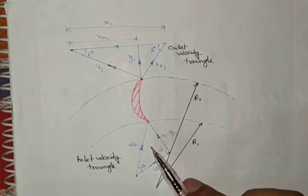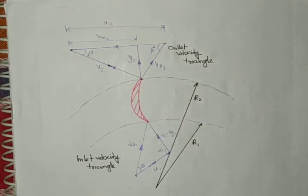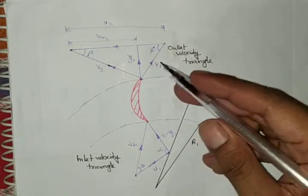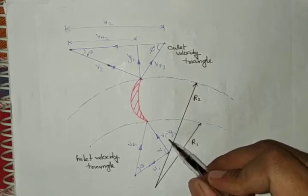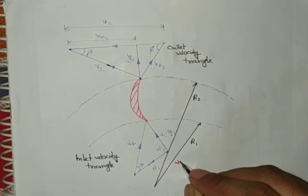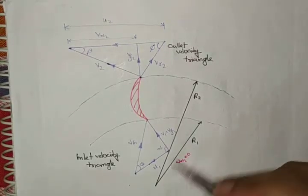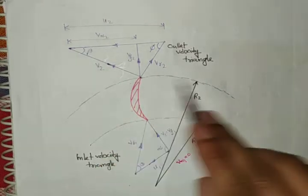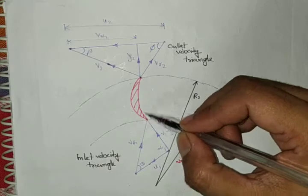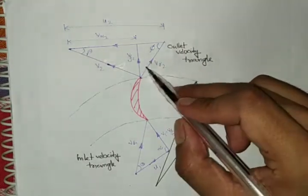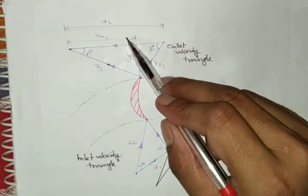This is the velocity diagram of a centrifugal pump, showing the vanes or blades. This is your inlet and this is your outlet. We assume that water or liquid enters radially, meaning alpha is 90°, the velocity of the wheel VW1 is zero, and V1 equals Vf1. The outer and inner diameters of the impeller are shown; inside the impeller you will find vanes. After liquid passes through, it comes out at the outlet, and the outlet velocity triangle is given here with its components.